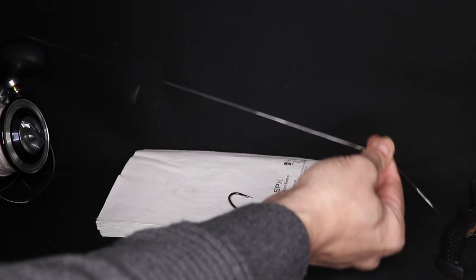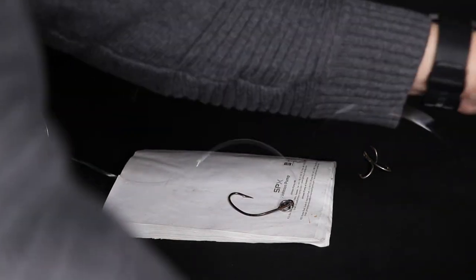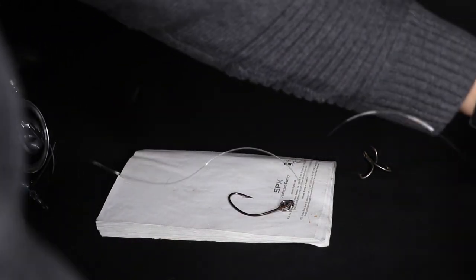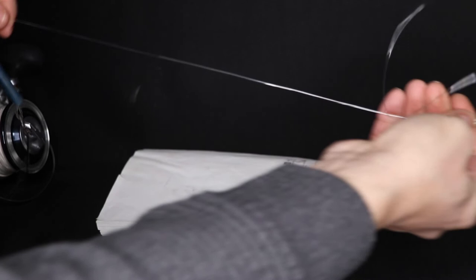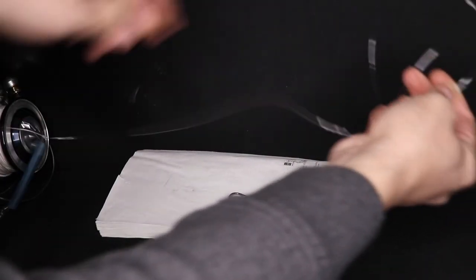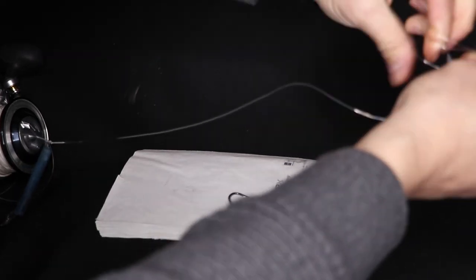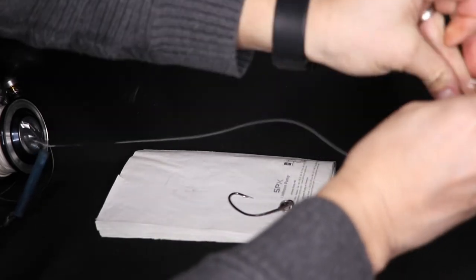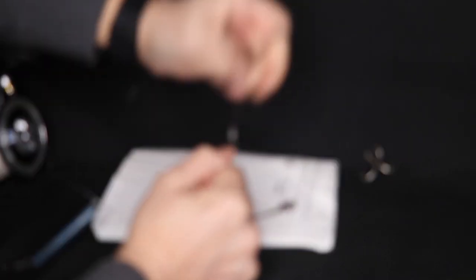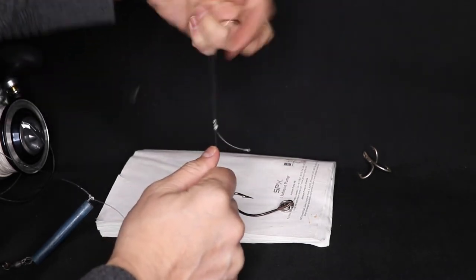Now I'm going to go down another foot, two feet. Leave myself enough room to tie a loop for my weights. Basically I want about a foot from that last hook. And then I'm just going to do a double overhand. Plenty of loop, and that'll hold. That'll hold easily up to a 20-ounce sinker.